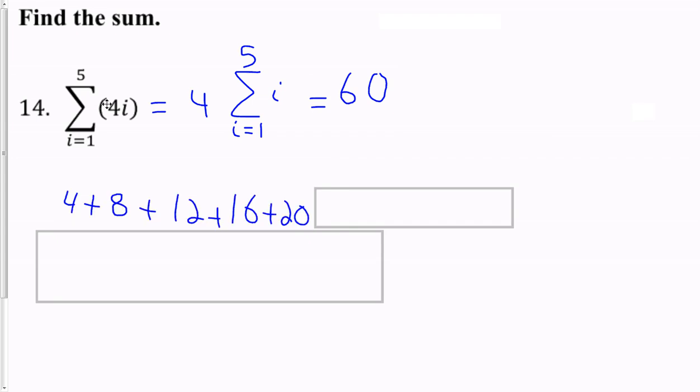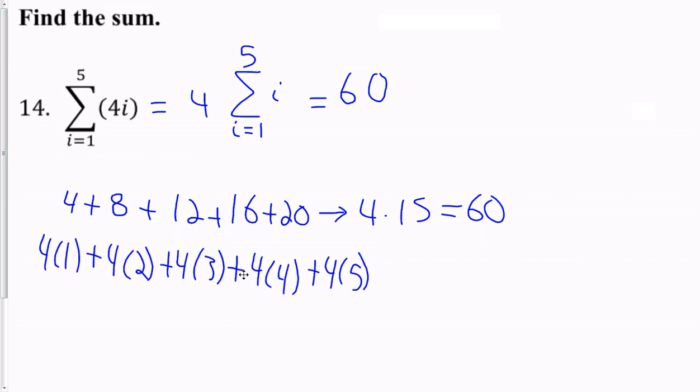Or we could have done 4 times 1 is 4. 4 times 2 is 8. 4 times 3 is 12. 4 times 4, 4 times 5, our fifth term. And then just add these. 12, 24, 40, 60. But you could also rewrite it as 4 times 15 equals 60. And this would have been what we did there mathematically, we just times 1 times 2 times 3.